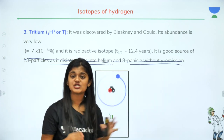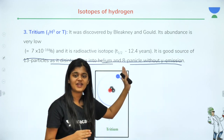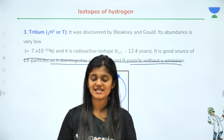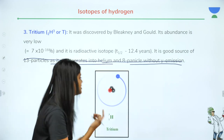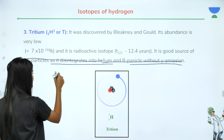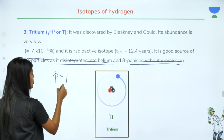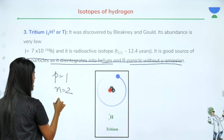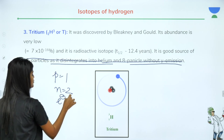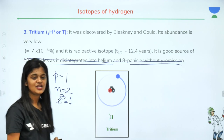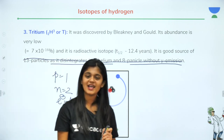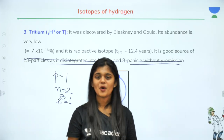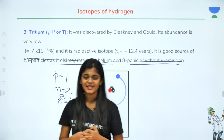Tritium has a half-life of 12.4 years. In tritium: protons = 1, neutrons = 2, electrons = 1. This completes the topic of isotopes of hydrogen.